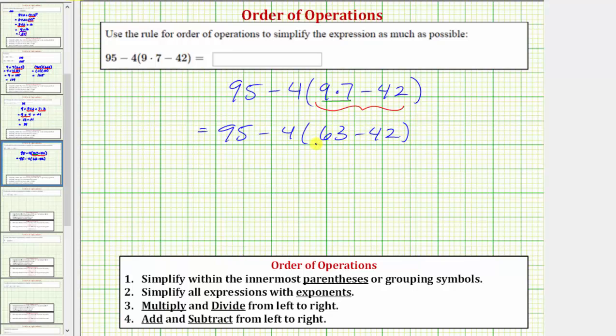Now we're still simplifying inside the parentheses, but now we find this difference. 63 minus 42 equals 21, so this simplifies to 95 minus 4 times 21.